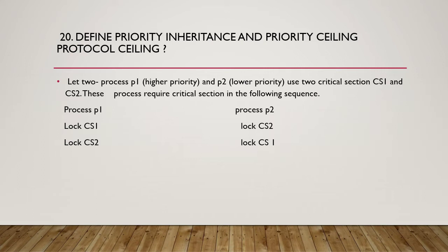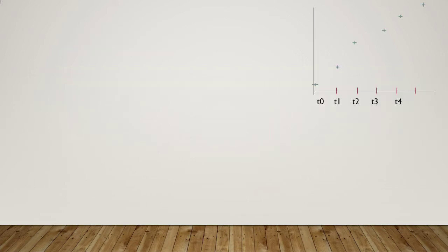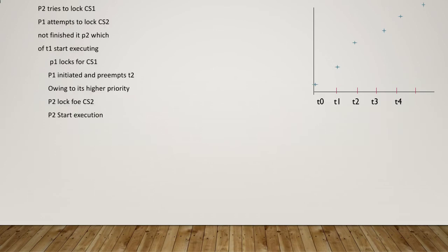Then P1 unlocks CS2 and unlocks CS1, P2 unlocks CS1 and unlocks CS2. In this sequence, P2 tries to lock CS1 but cannot, since P1 has a lock on it. P1 then attempts to lock CS2 but is blocked because P2 has not finished with it.